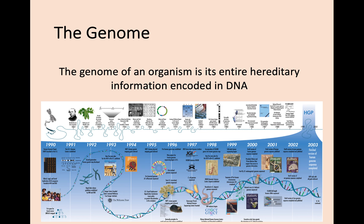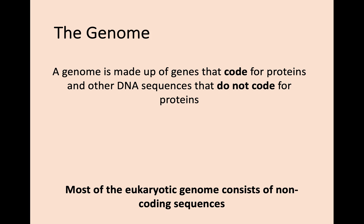But the genome is made up of two slightly different parts. First of all, it's made up of sequences that code for proteins, which we call genes, but it's also made up of DNA sequences that do not code for proteins. Both of these together make up the entire genome, and interestingly, most of the entire eukaryotic genome is made up of non-coding sequences. It's only a very small percentage that actually codes for proteins and are therefore genes.